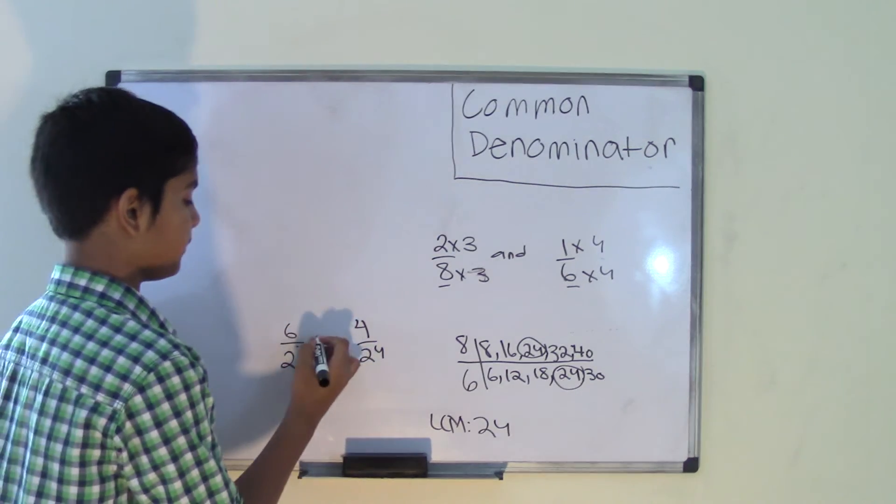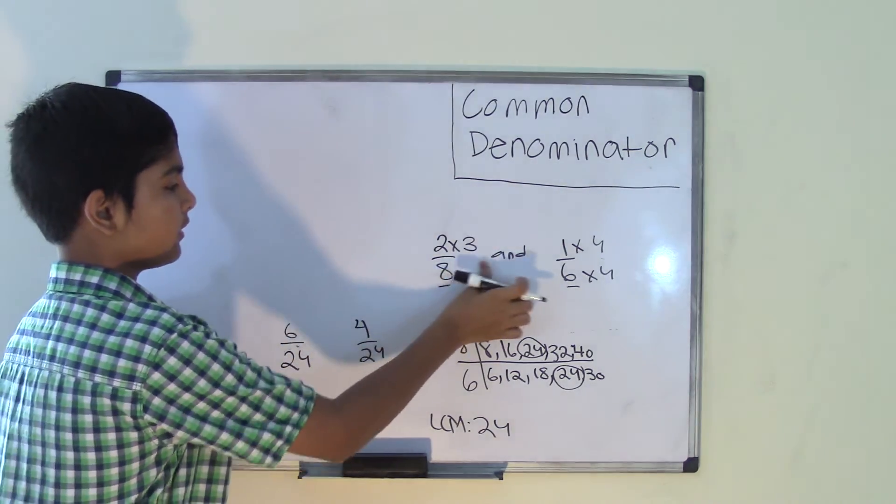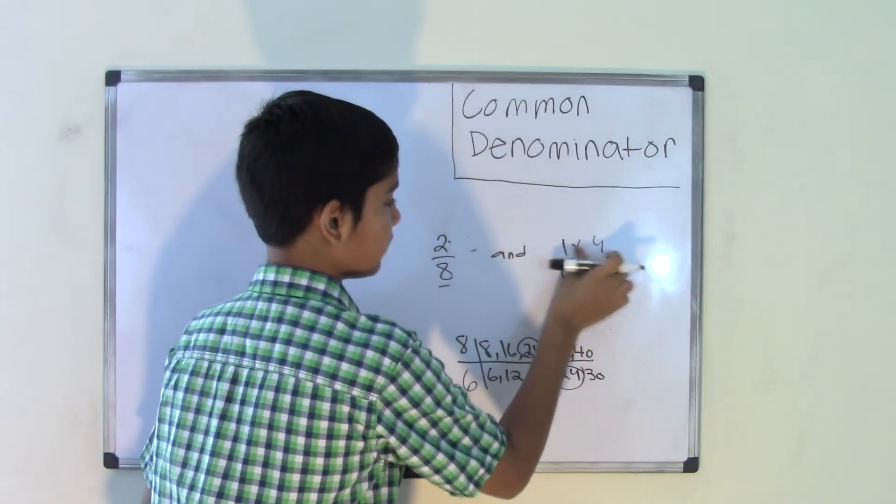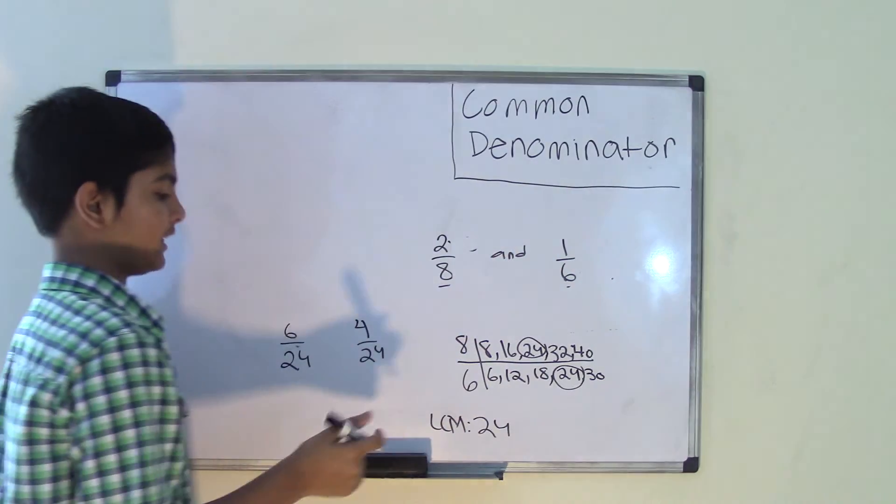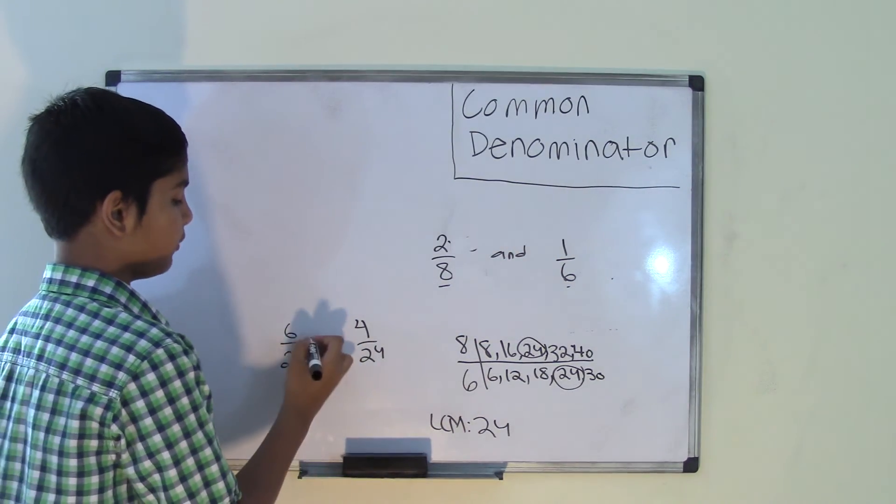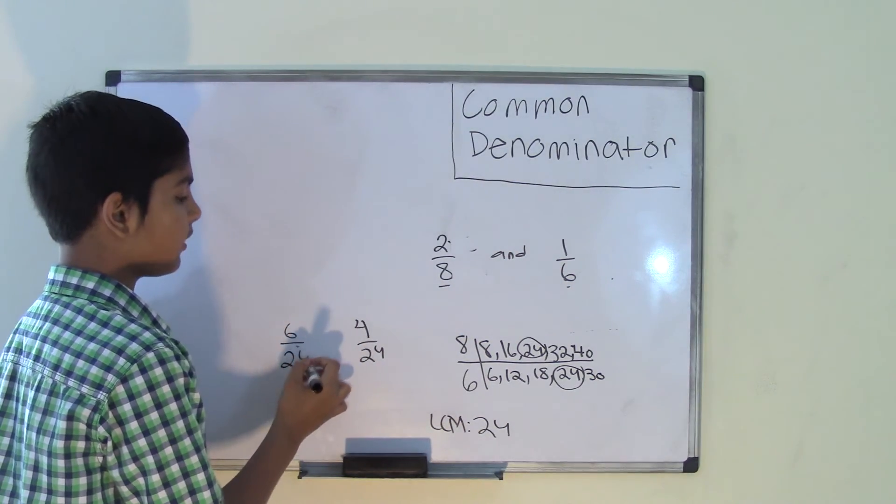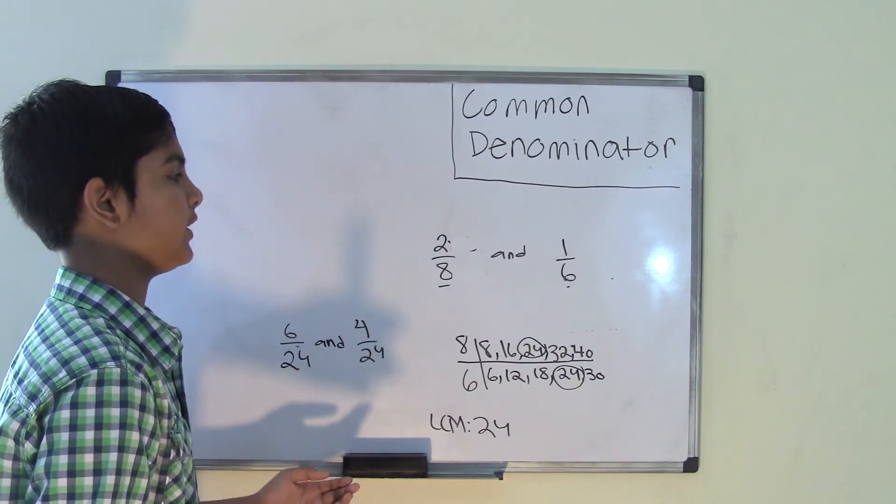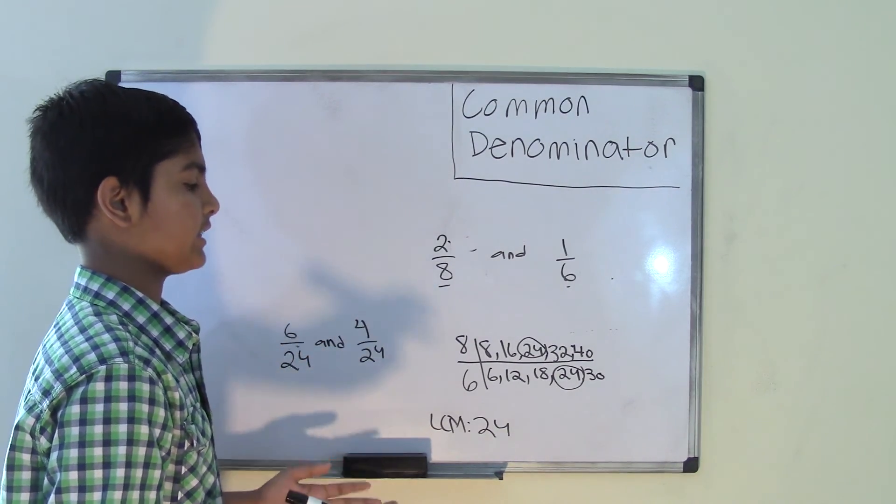So now we've renamed the fractions. 2 over 8 and 1 over 6 with the common denominators are 6 over 24 and 4 over 24. This is how you find the common denominators for 2 fractions.